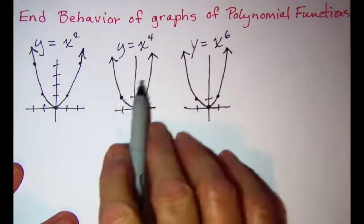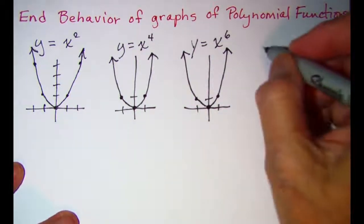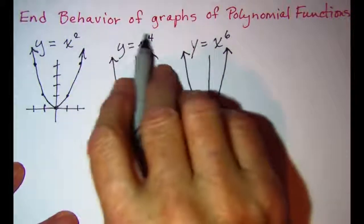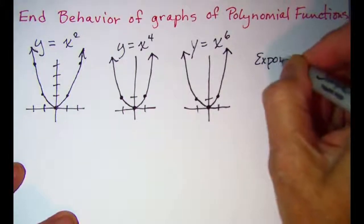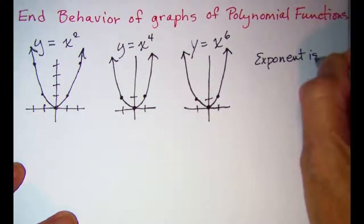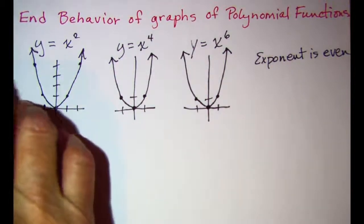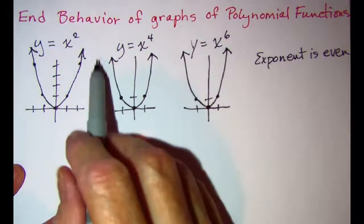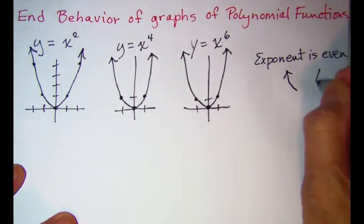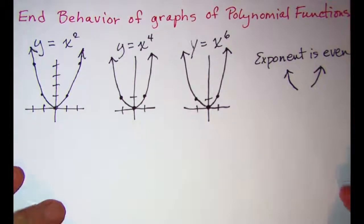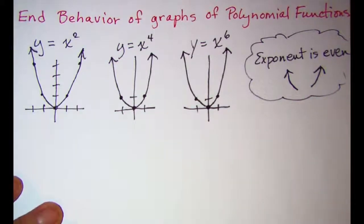For all of these graphs, something we can notice is that the exponent is even on all of these functions, and our end behavior is both arms up at the ends of the graphs. So our end behavior looks like this — this is something we'll want to keep in mind when we graph polynomial functions.